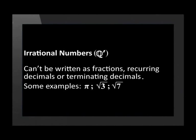There is one part of the diagram we haven't discussed yet: irrational numbers. Irrational numbers can't be written as fractions, recurring decimals, or terminating decimals. Typical examples are pi and square roots of prime numbers.